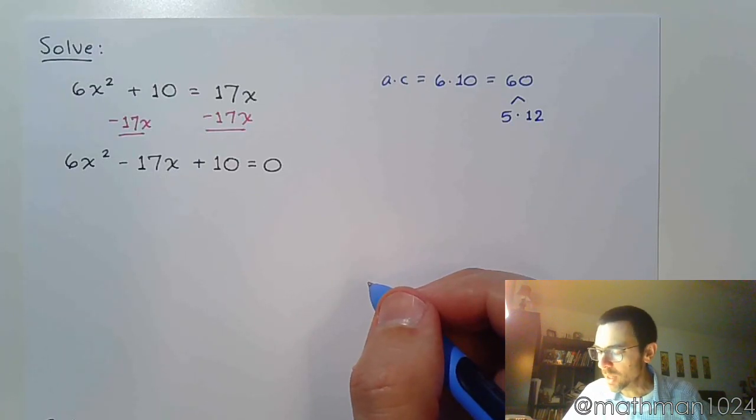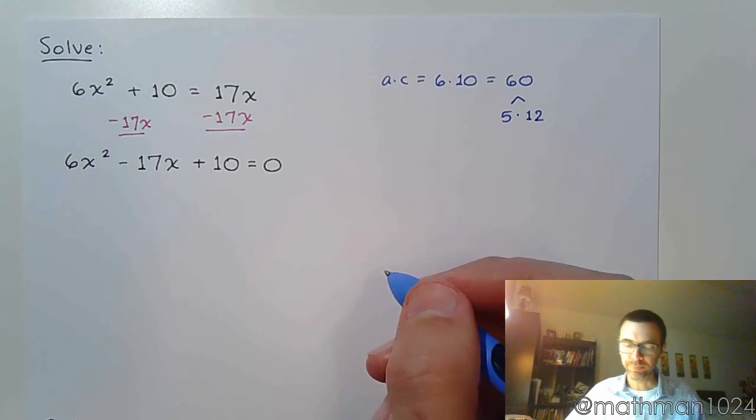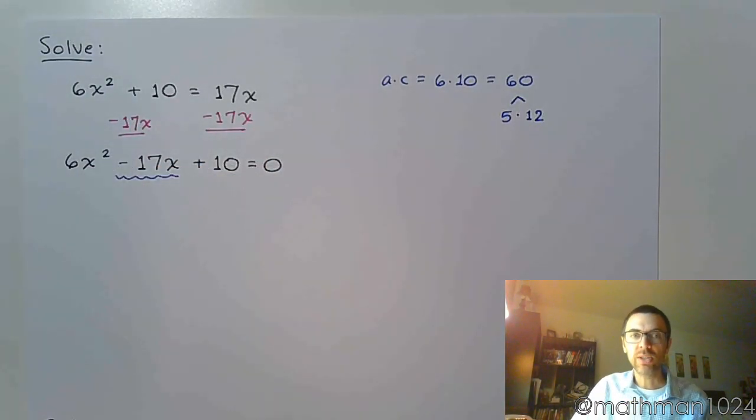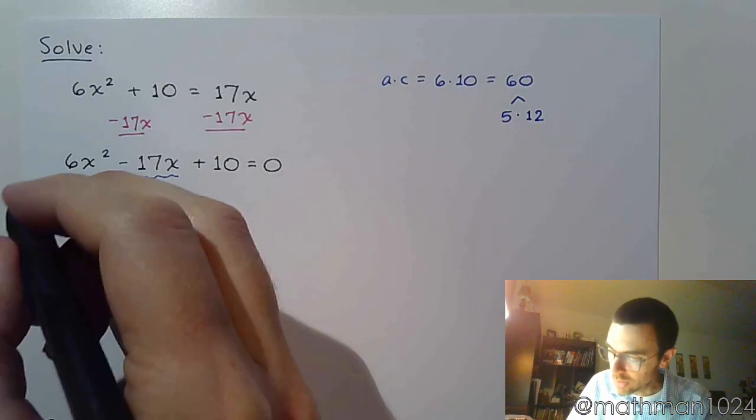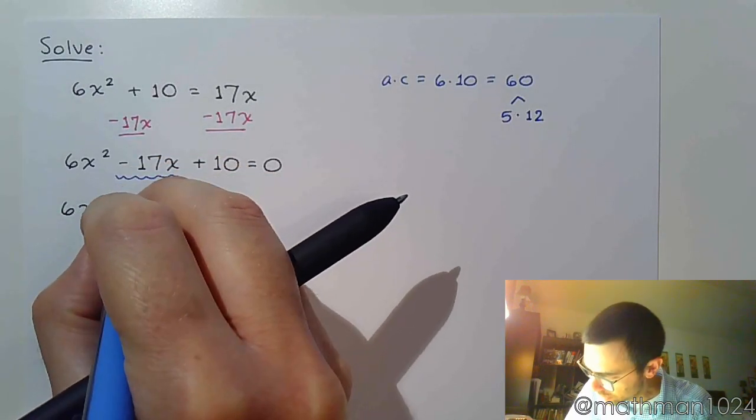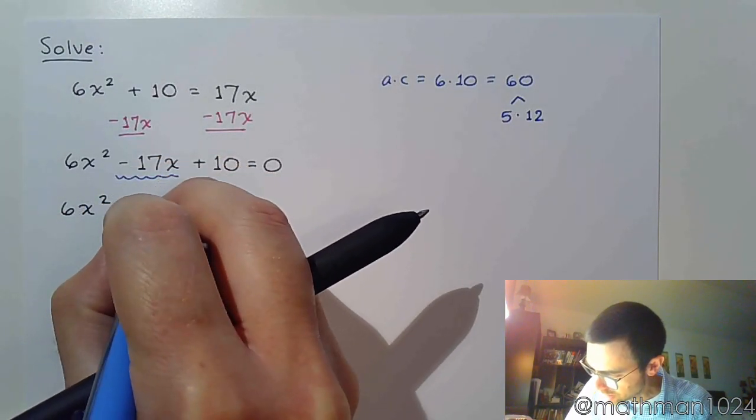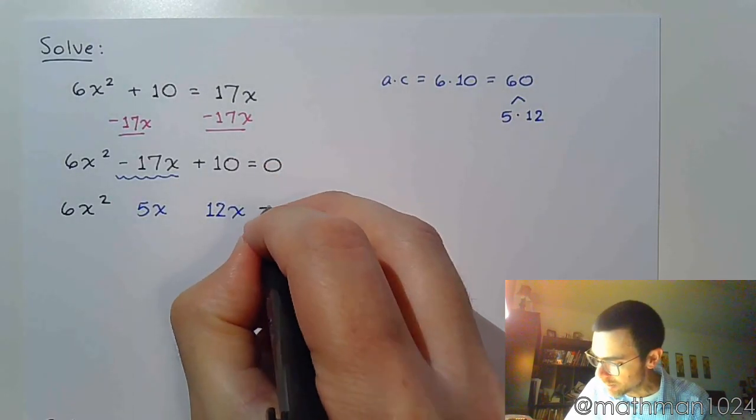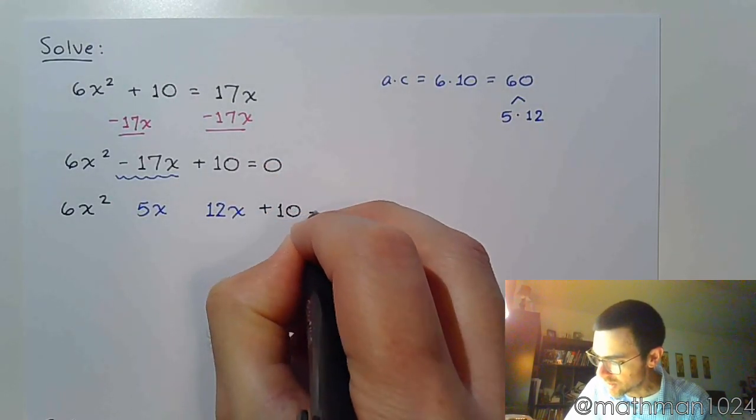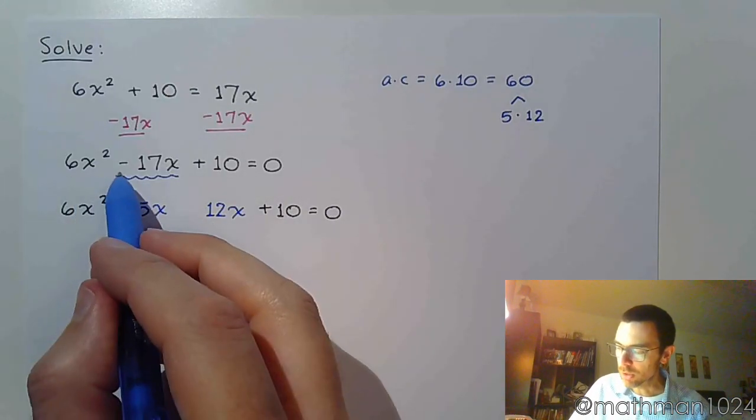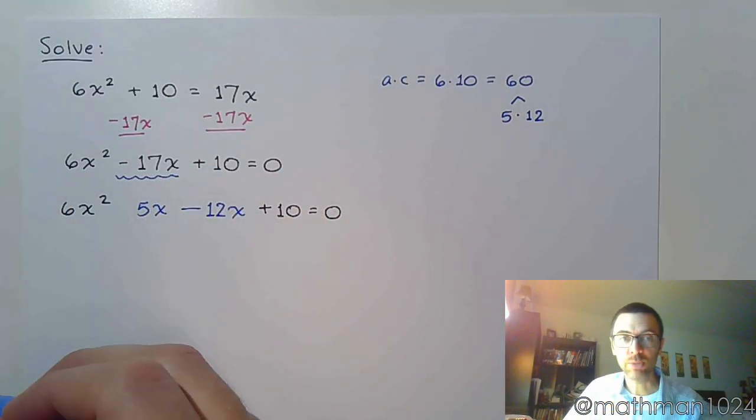We've got a lot of different ways of working this. I think the most common way is to just take this 17x and rewrite it using the 5 and the 12. So we would start off by saying 6x² - 5x - 12x + 10 = 0. Now I haven't put the signs here yet. Whatever the sign is of the middle term is going to match the sign of the larger term once I split it.